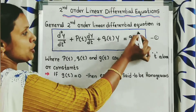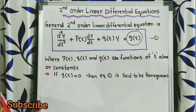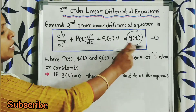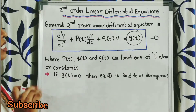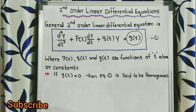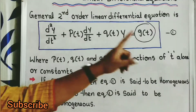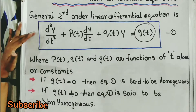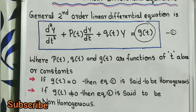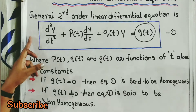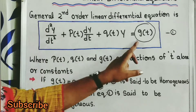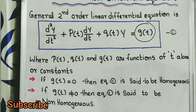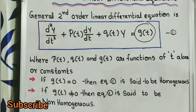In equation 1, if g(t) = 0, then equation 1 is said to be a homogeneous second order linear differential equation. If g(t) ≠ 0, then equation 1 is said to be a non-homogeneous second order linear differential equation.